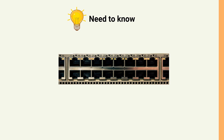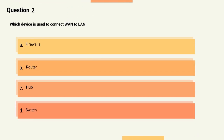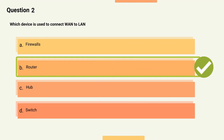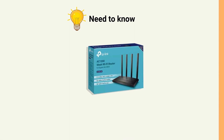Question 2: Which device is used to connect a WAN to a LAN? Options: A) Firewalls, B) Router, C) Hub, D) Switch. The correct answer is Option B, Router. Explanation: Routers are used to control traffic flow on networks and are often used to connect similar networks and control traffic flow between them. They are smarter than hubs and switches.